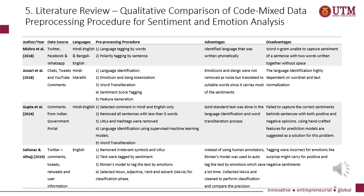The next paper was from Gupta et al., using comments from an Indian government portal in Hindi-English. They selected comments in Hindi and English only, removed sentences with fewer than five words, removed URLs and hashtags, and performed language identification using supervised machine learning models and word transliteration. The advantage was that a gold standard test was done in the language identification and word transliteration process. The disadvantage was it failed to capture the correct sentiment behind sentences with both positive and negative opinions; handcrafted features for the prediction model were suggested as a solution.